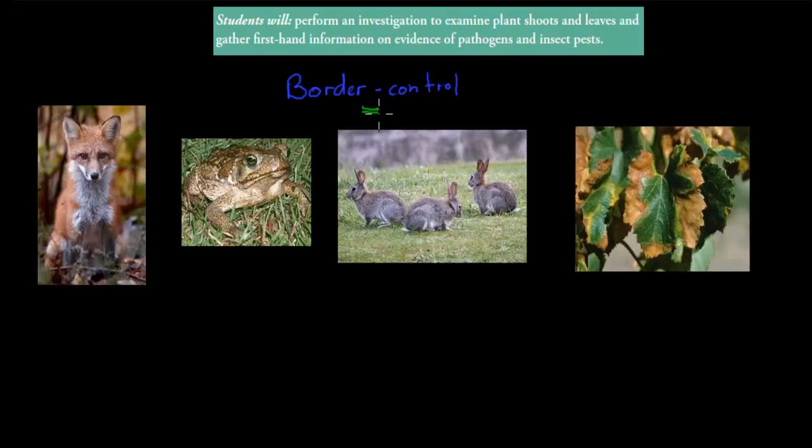Why do we have border control? As I mentioned in the last video, the Australian Quarantine and Inspection Services are basically the officers at our airports and our docks, our shipping docks, to make sure that things that enter are disease free. But also to make sure that introduced species don't enter Australia.